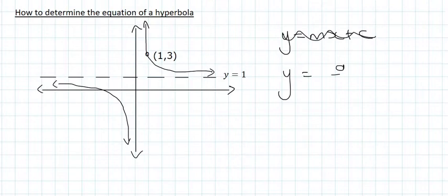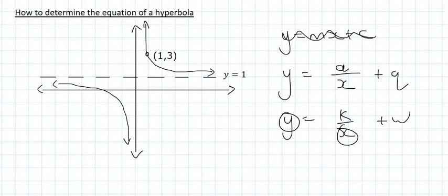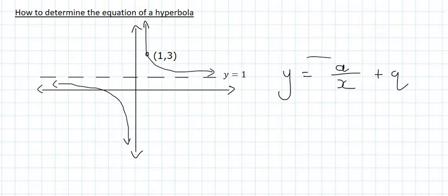Hyperbolas have these equations where the x is at the bottom. I've used a and q but you could use anything. Remember we've looked at this in previous equations, so you could even use k and w. What's important is that you've got y on the left and you've got x as the denominator like that. From what I've seen, most teachers and textbooks are going to use this over here.